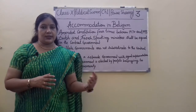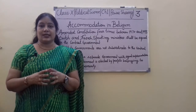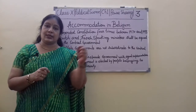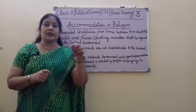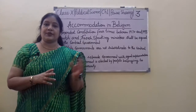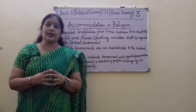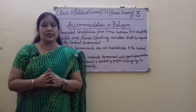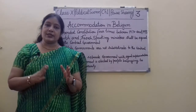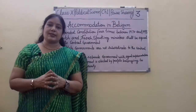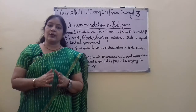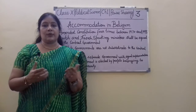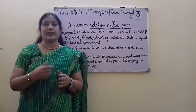These measures are complicated. It is complicated — which portfolio has to be given to whom? Is it French or Dutch? But in 1993, the French people accepted it. And they have been living peacefully since then. This is called Accommodation in Belgium, or the Model of Accommodation in Belgium.